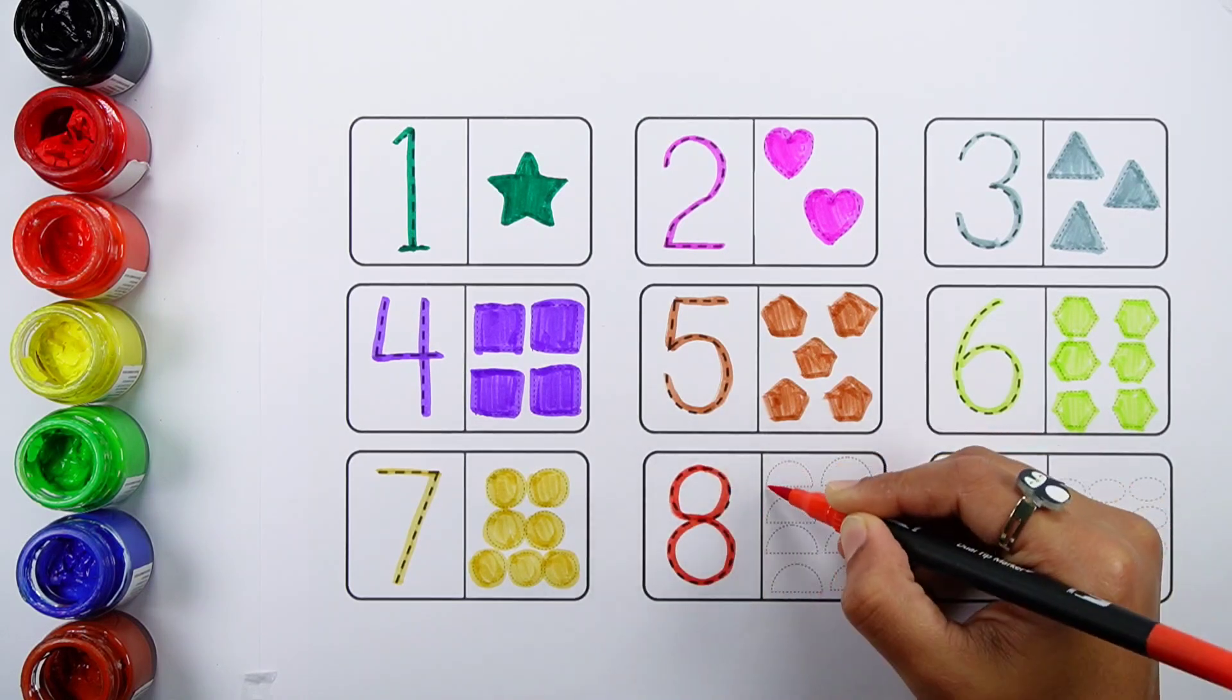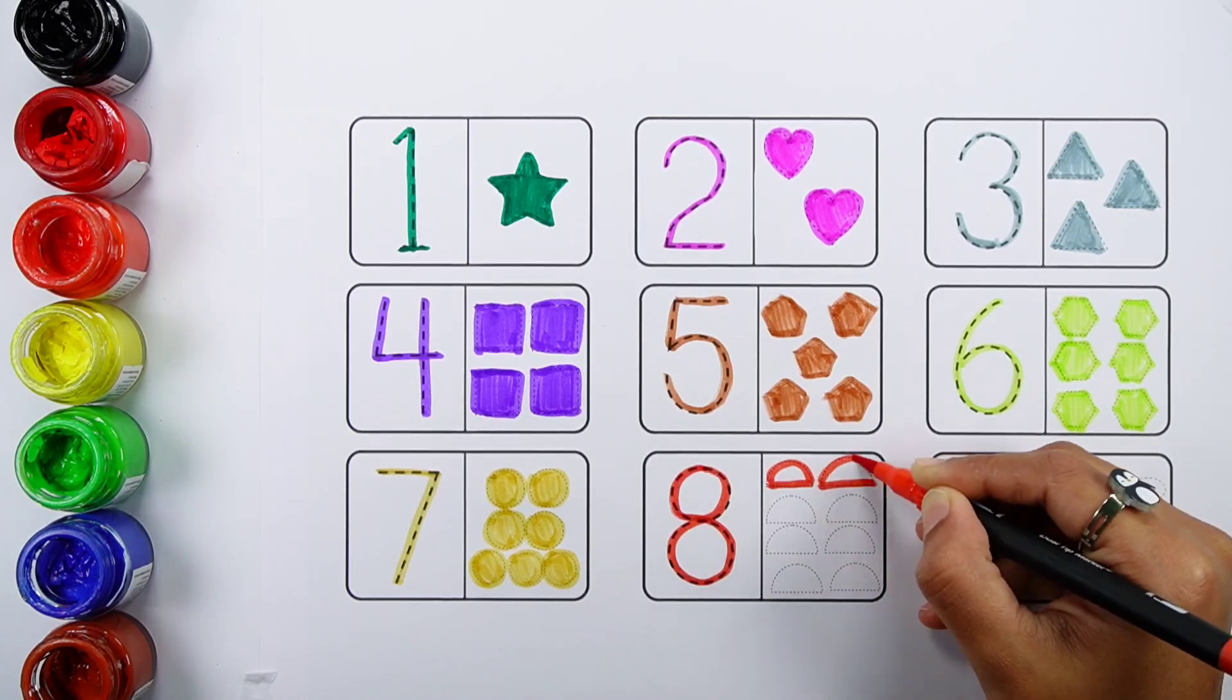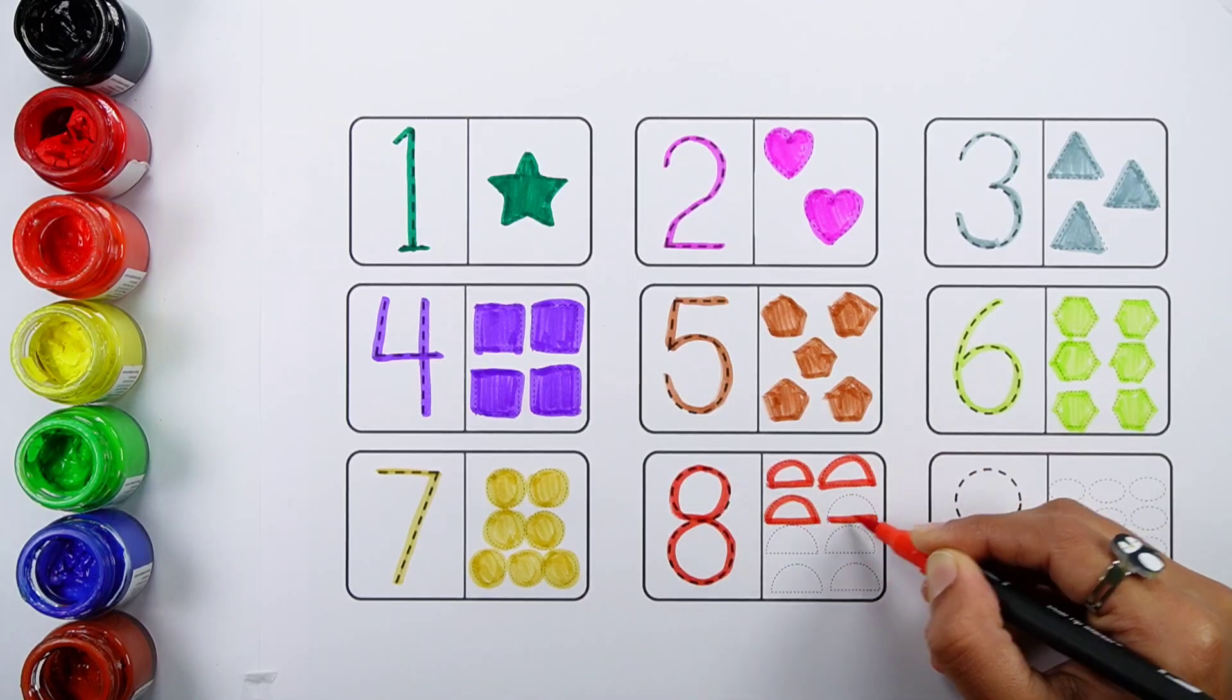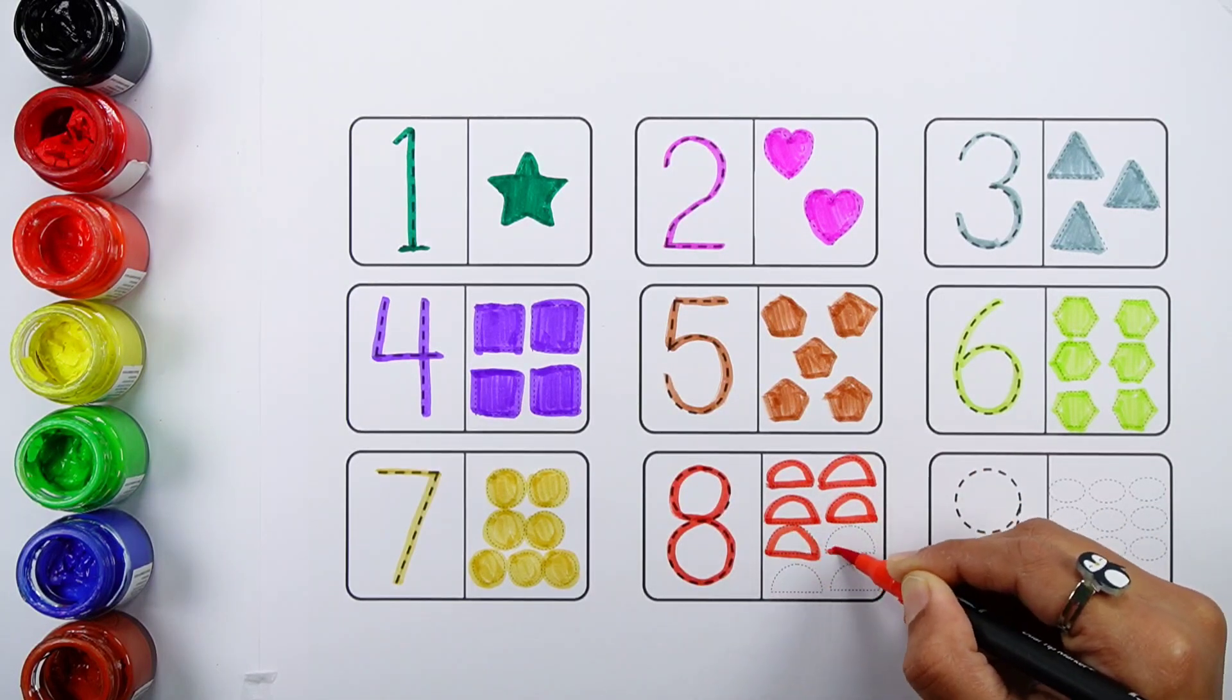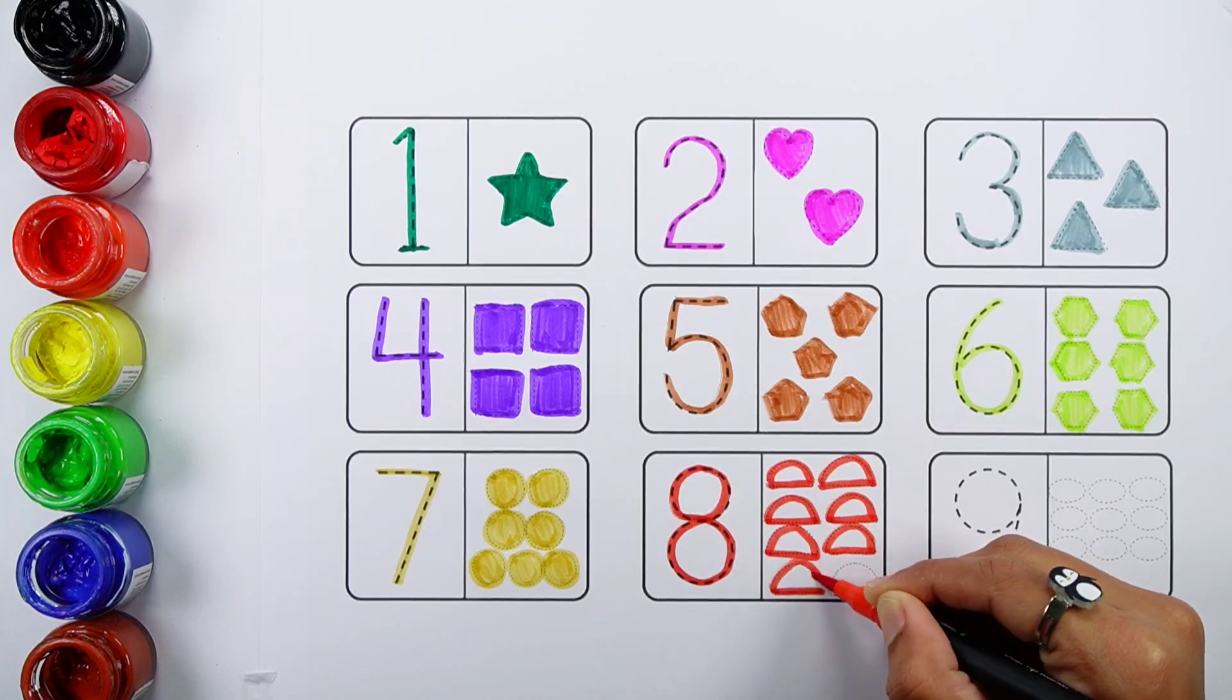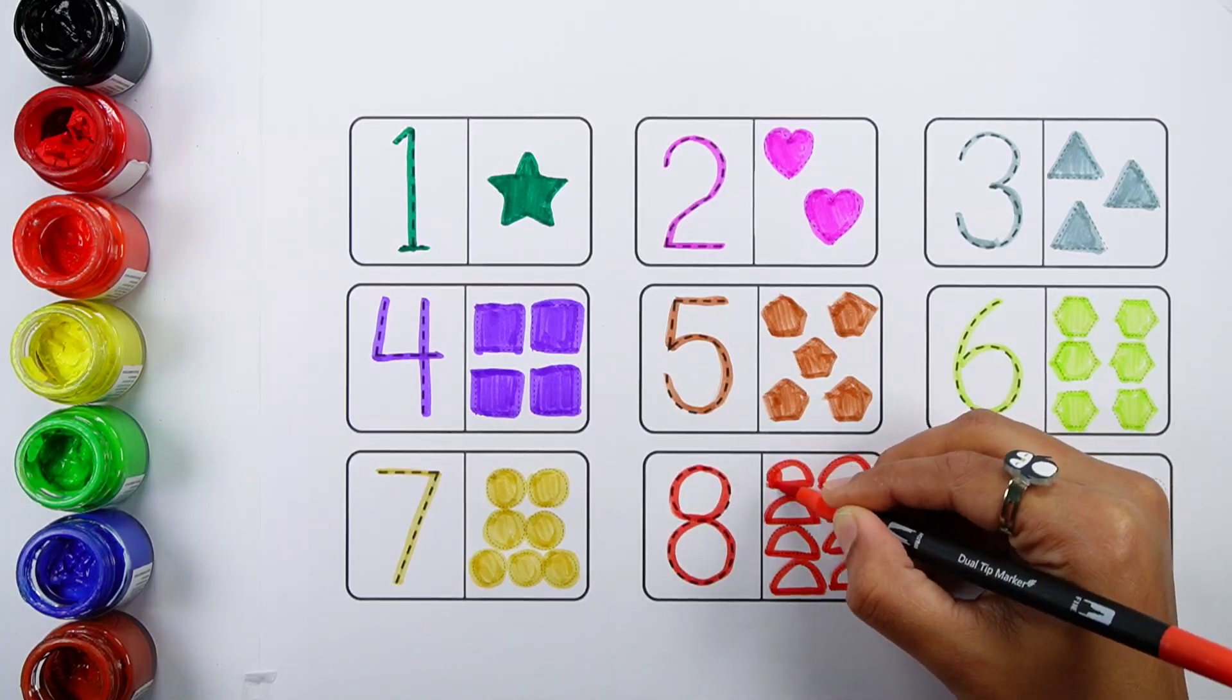Number eight. One, two, three, four, five, six, seven, eight. Eight semicircles.